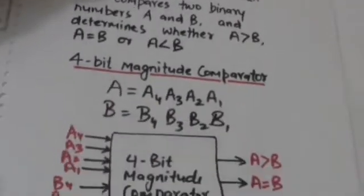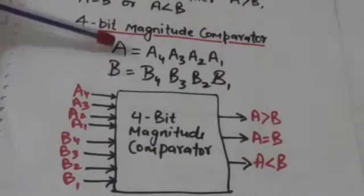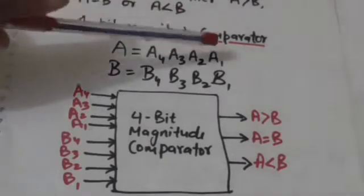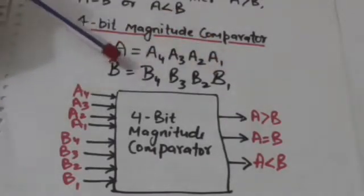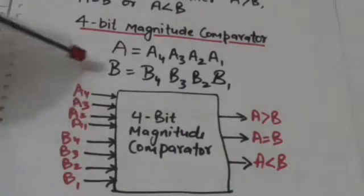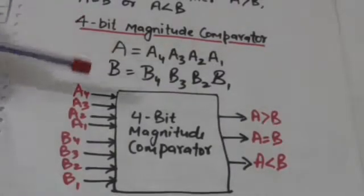Let us design a 4-bit magnitude comparator. A 4-bit magnitude comparator will compare the magnitude of two 4-bit binary numbers A and B. A4, A3, A2, A1 are the bits of binary number A, and B4, B3, B2, B1 are the bits of binary number B.